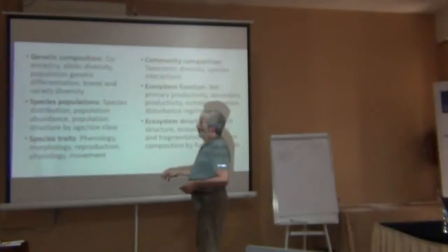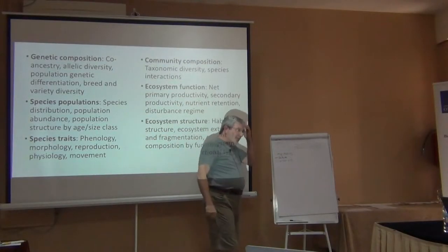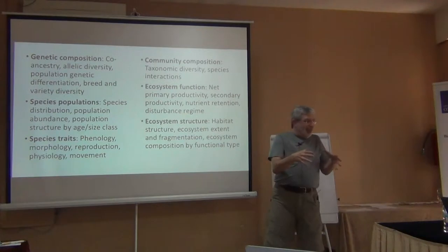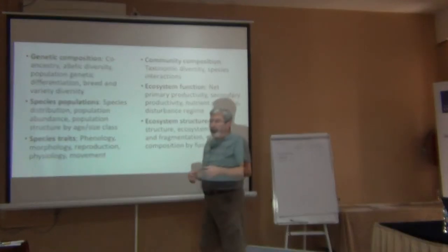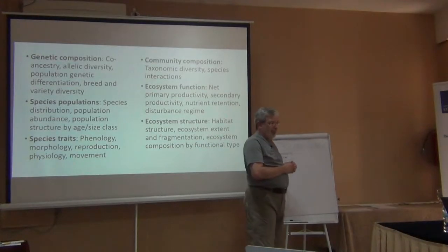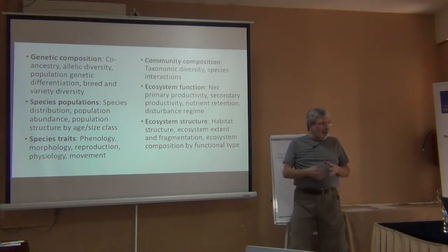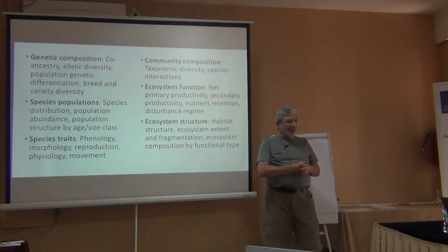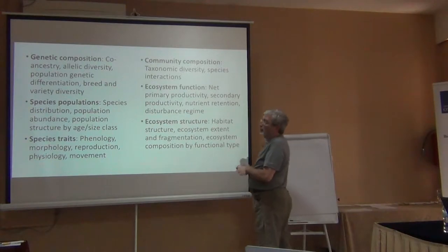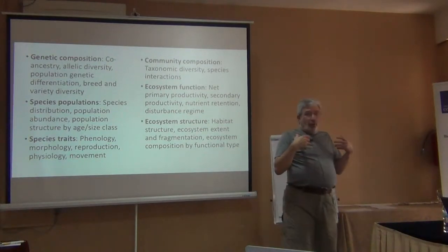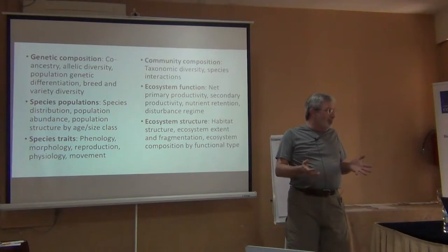Each one of them includes several kinds of sub-variables. So if we talk about species populations, that could be the existence of a population be it big or small, or it could be population in the sense of numbers of individuals. All I'm trying to do is remind you of the six essential biodiversity variables and give you a plan for the next couple of days. We're going to take each one of these variables and talk about it in detail — what is it? It sounds simple, but it's not usually.